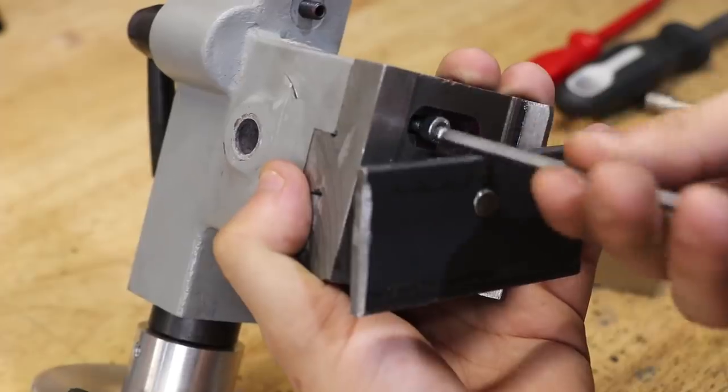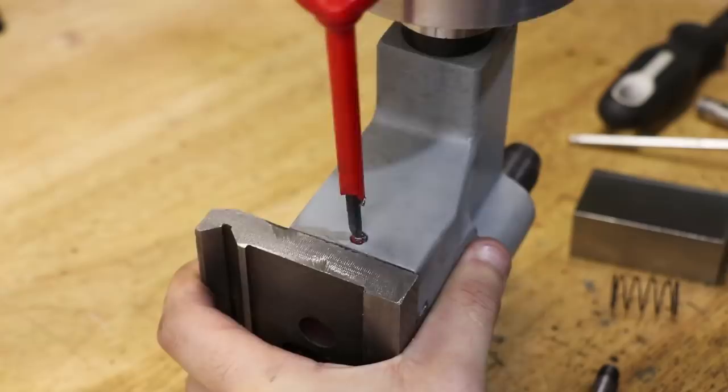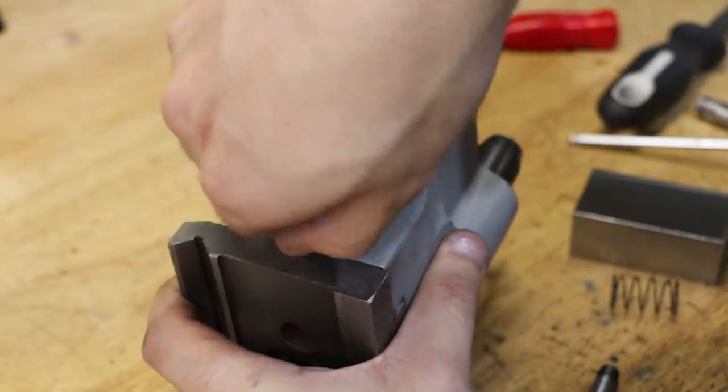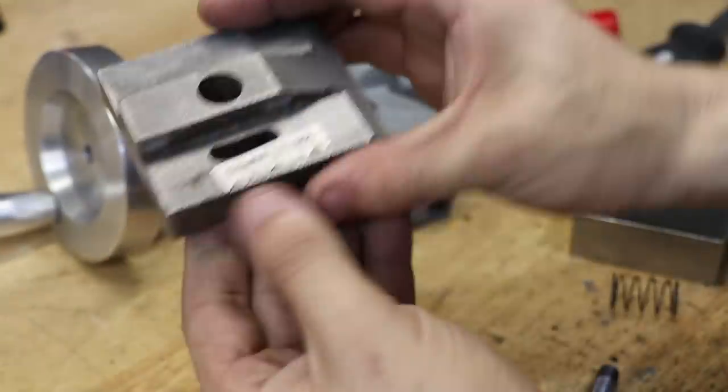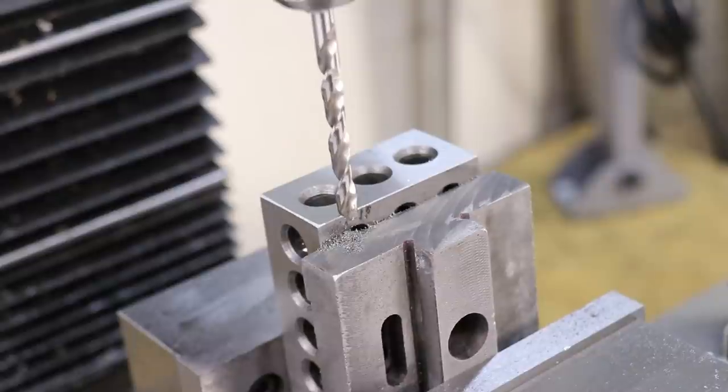With the holes now drilled, I'll disassemble the tailstock and I'll mount the base in the vise, and I'll drill two holes and tap them for M6.